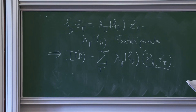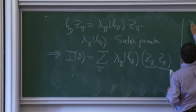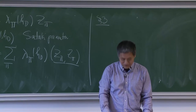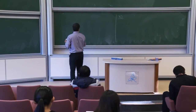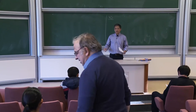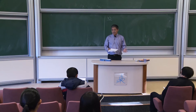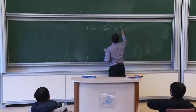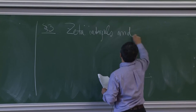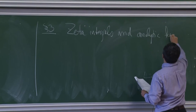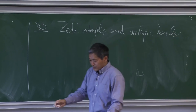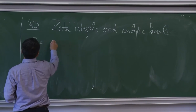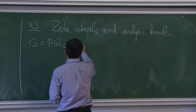This completes the geometric kernel discussion. Now I want to talk about the analytic kernel. As I said, there are three different kernels, and the theorem is proved by showing all three equal each other. The second one involves zeta integrals. We start with G = PGL2. So we start with a Hecke operator — a smooth compactly supported function f on G(A).